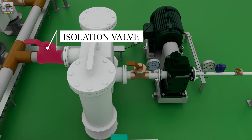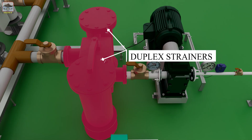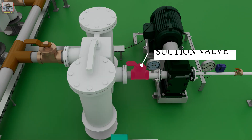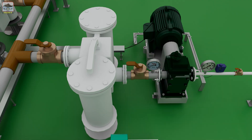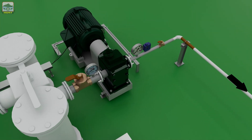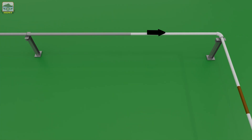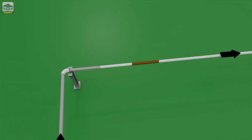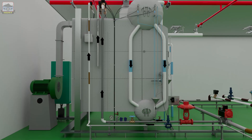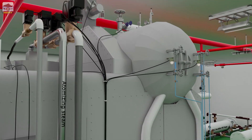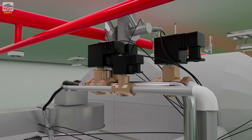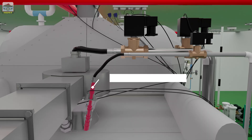Pilot burner system components include: isolation valve for duplex strainers, duplex strainers, suction valve for pilot burner diesel oil pump, pilot burner diesel oil pump, discharge valve for pilot burner diesel oil pump, solenoid valve, and pilot burner.